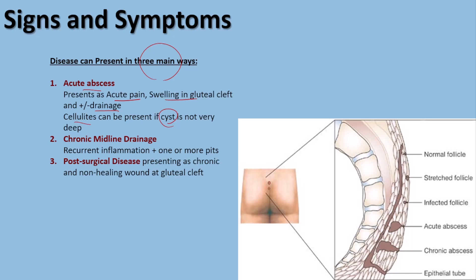The second presentation is chronic midline drainage, due to recurrent inflammation and creation of one or more pits in the gluteal area. The third presentation is post-surgical disease, characterized by a chronic non-healing wound in the gluteal cleft.